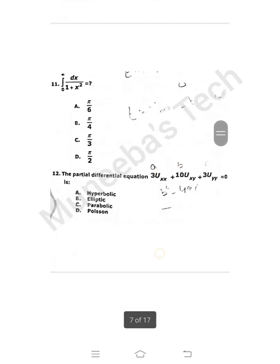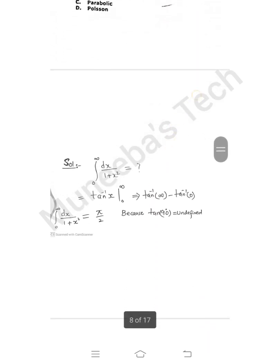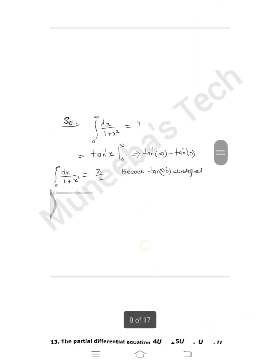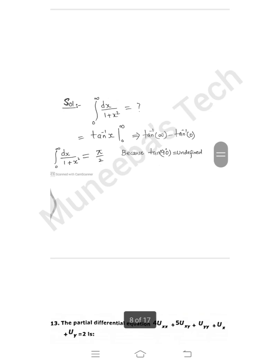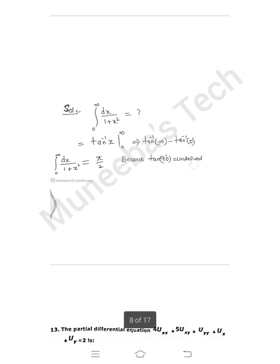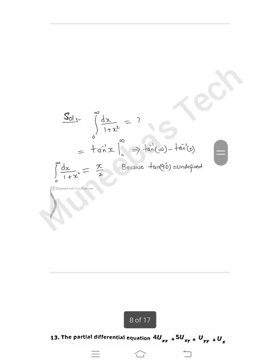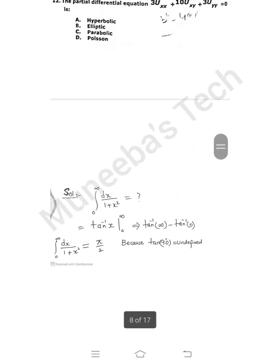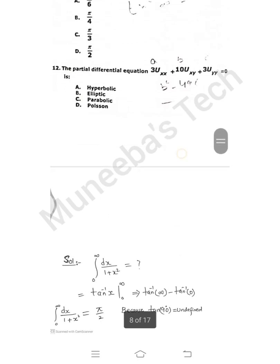Question 11: The limit from 0 to infinity of dx/(1 + x²). This is basically the standard form for tan inverse x. You just put the limits infinity and 0. You know that tan 90 degrees is undefined, so we can say π/2 is the answer because tan inverse 0 equals 0. So it approaches to infinity when we have the angle π/2. Option D is correct.